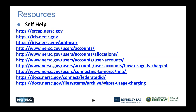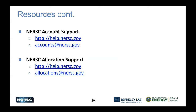Here's a list of links to our website for information if you have any questions. For user account questions, you can submit a trouble ticket through help.nersc.gov or send an email to accounts@nersc.gov. If your question is about project allocations, send it to allocations@nersc.gov or submit a trouble ticket. Thank you.